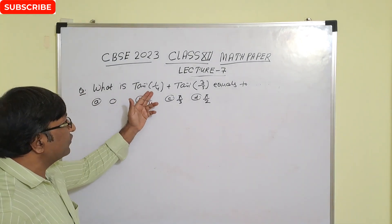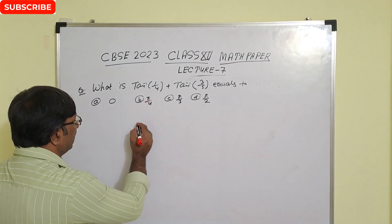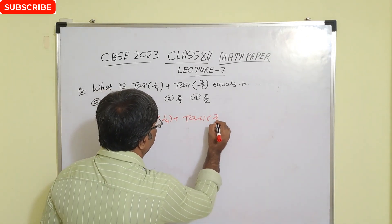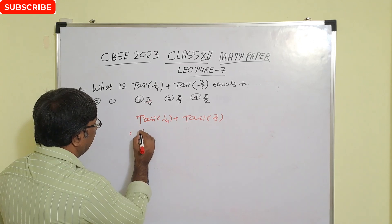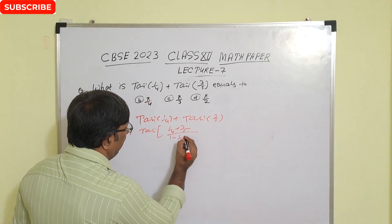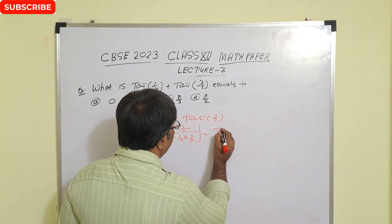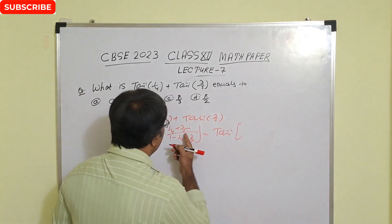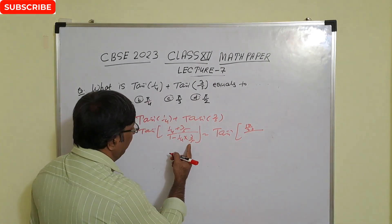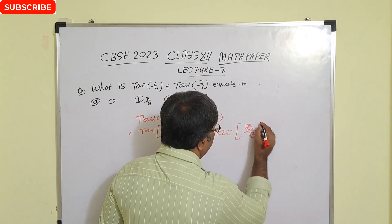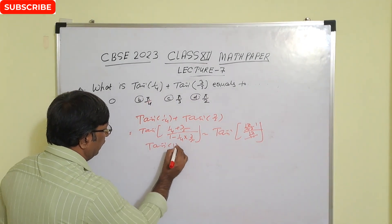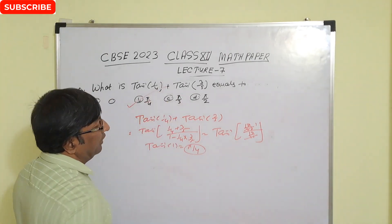Next question: what is tan⁻¹(1/4) + tan⁻¹(3/5)? Using the formula tan⁻¹(x) + tan⁻¹(y) = tan⁻¹((x+y)/(1-xy)), we substitute x = 1/4 and y = 3/5. The numerator is 1/4 + 3/5 = 5/20 + 12/20 = 17/20. The denominator is 1 - (1/4)(3/5) = 1 - 3/20 = 17/20. So the result is tan⁻¹(1), which equals π/4. Option B is the correct answer.